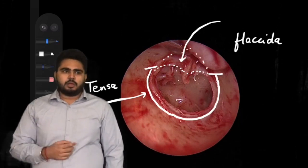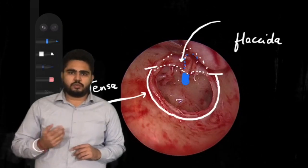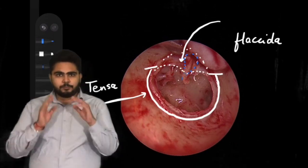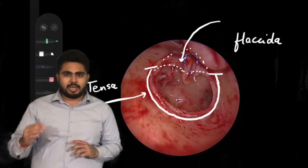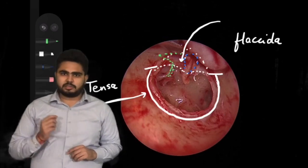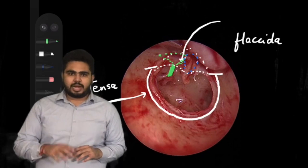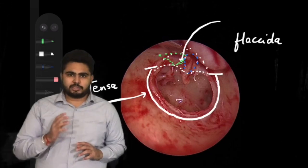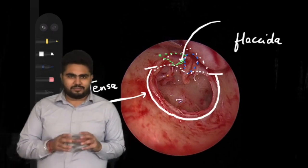The part above it, triangular in shape, is the pars flaccida. Now, what structures can we see when examining the middle ear? We can see the handle of the malleus — that bone there is the handle. The head of the malleus, the anterior process, and the lateral process we won't be able to see because they lie in the epitympanum. Other than that, we can see the long process of the incus — the green one is the long process of the incus. The body of the incus and short process lie in the epitympanum, and the malleus-incudal joint also lies in the epitympanum.